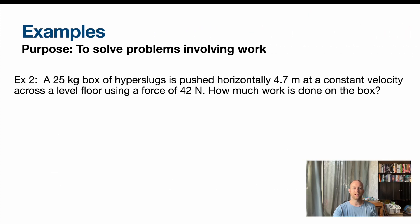So let's say we've got a box of hyper slugs. Oh, you're gonna see a lot of these slugs coming up. If we've got a box of hyper slugs that is pushed horizontally at a constant velocity across the level floor using a force of 42 newtons, we want to know how much work is done on that box. So here's a box, there's a hyper slug, it's super cute, we've got some forces acting on it. Normal force and Fg, those are equal to each other. We have a force applied, we have a force of friction, we're told it's constant velocity. So these two must be equal to each other as well.